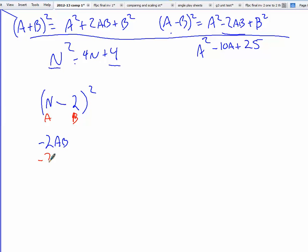So we have negative 2 times our a term, which is n, times our b term, which is 2. Negative 2 times n times 2 is negative 4n.